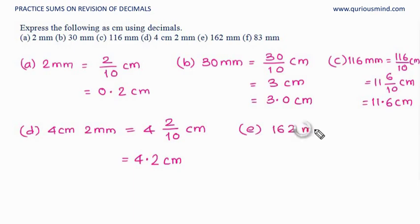E, 162 millimeter. That is equal to 162 divided by 10 centimeter, which gives me 16 whole 2 upon 10 centimeter. Which means 16 whole, then point, and 2 at the 10th place. 16.2 centimeter.